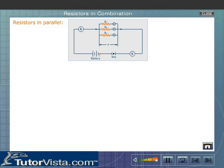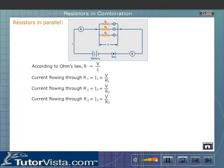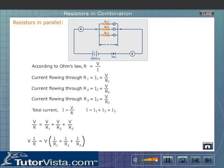Let us now calculate the effective resistance of the circuit. According to Ohm's law, R = V/I. In a parallel circuit, the current flowing through individual resistors varies. Hence we first calculate I1, I2, and I3. Total current I = V/R. Since I = I1 + I2 + I3, we get V/R = V/R1 + V/R2 + V/R3.